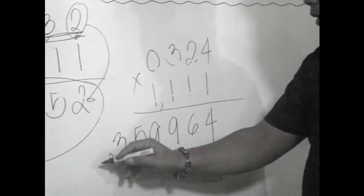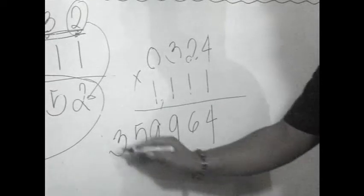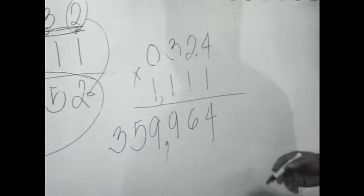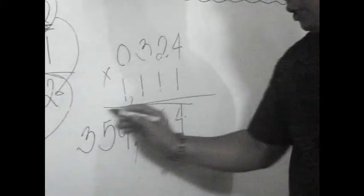No need of writing 0. Because, writing 0 here is just the same as having this number. So, the answer, therefore, is 359,964.